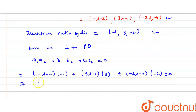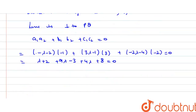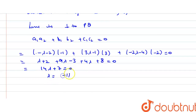Expanding: (lambda plus 2) plus (9 lambda minus 3) plus (4 lambda plus 8) equals 0, giving 14 lambda plus 7 equals 0. Therefore lambda equals minus 1 by 2.